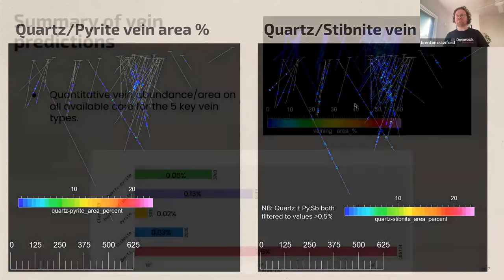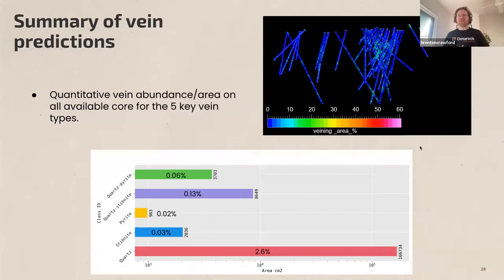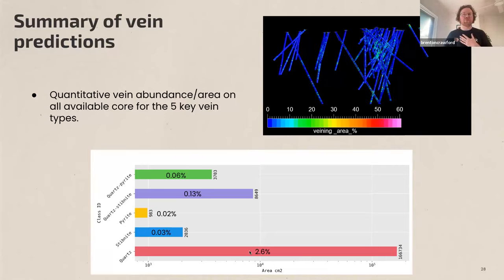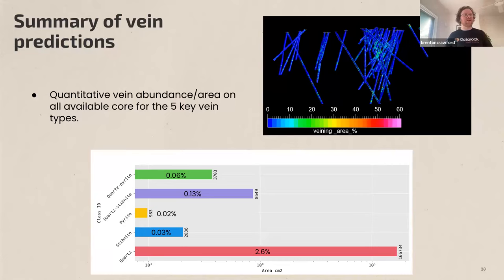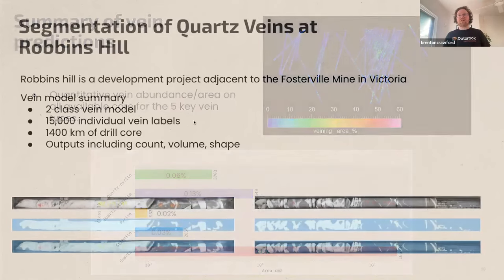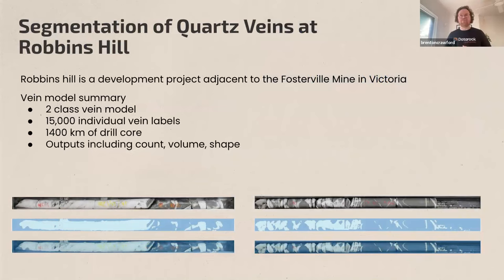To summarize, we can create quantitative vein abundance data across all the core for those five key vein types. A really interesting output is what proportion of the total drilled rock area each vein type occupies: over 13 kilometers, 2.6% of the rock was quartz by area, 0.03% was stibnite, 0.02% was pyrite, 0.13% was quartz-stibnite, and 0.06% was quartz-pyrite. It's a really interesting way to visualize vein type abundance as an actual quantitative area.